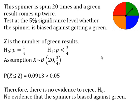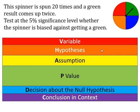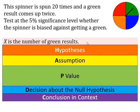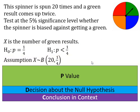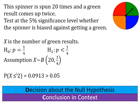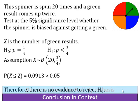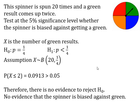To summarise those steps — very similar to the critical region method. We write down the variable, then our two hypotheses, then the distribution assuming the null hypothesis is correct. We work out our p-value — the probability of getting the test statistic or more extreme. We then write down our decision on the null hypothesis, and finally write down our conclusion in the context of the problem.